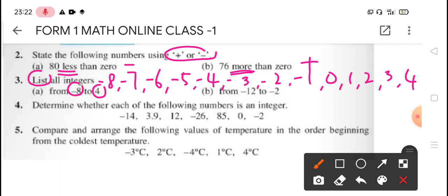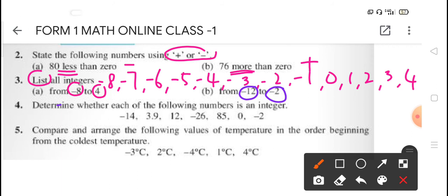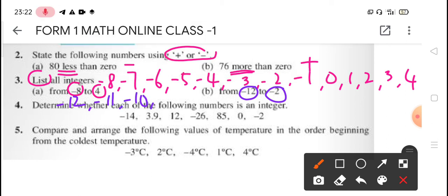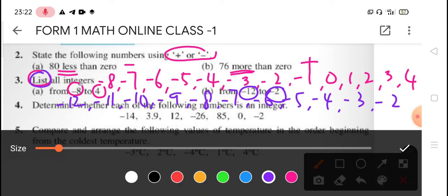Then we continue with B. We start from negative 12 until negative 2. So here we go. We have negative 12, negative 11, negative 10, negative 9, negative 8, negative 7, negative 6, negative 5, negative 4, negative 3, and negative 2. So remember, list means you have to write everything.